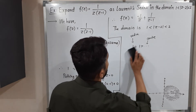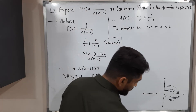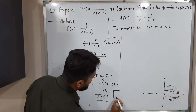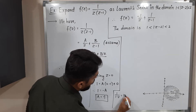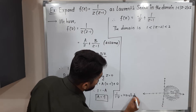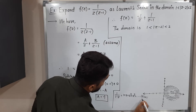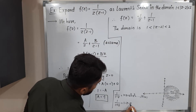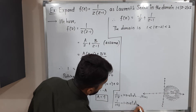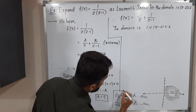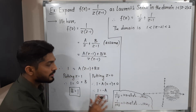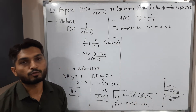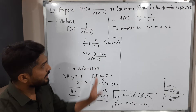When finding Laurent expansions, we mostly use two series: 1/(1+z) = 1 - z + z² - z³ + ⋯, and 1/(1-z) = 1 + z + z² + z³ + ⋯, both valid when |z| < 1. In this example, we will use these two series as well.